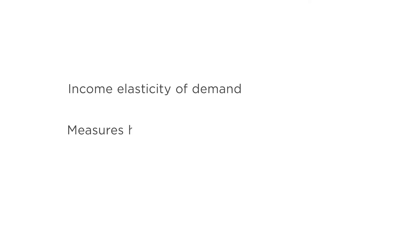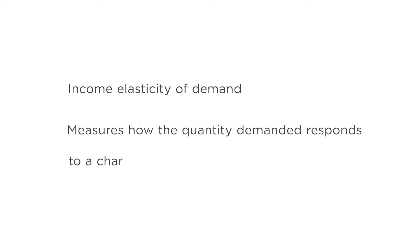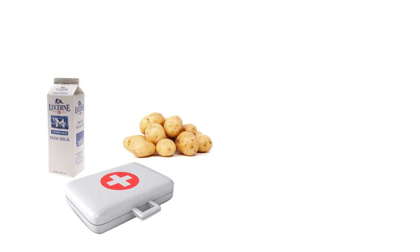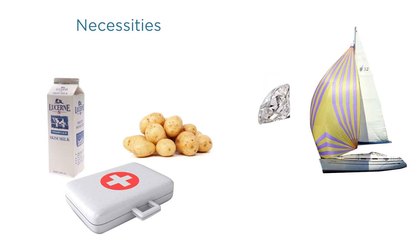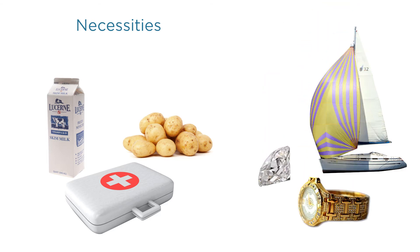Just like the price elasticity of demand measures how quantity demanded responds to a change in price, the income elasticity of demand measures how quantity demanded responds to a change in income. For some goods, if you're poorer you won't consume much less because you need them to live — we call these necessities. For other goods, if you're poorer you'll consume a lot less because you want to focus resources on necessities — we call these luxuries. So for necessities the income effect will be small, but for luxuries it will be large.